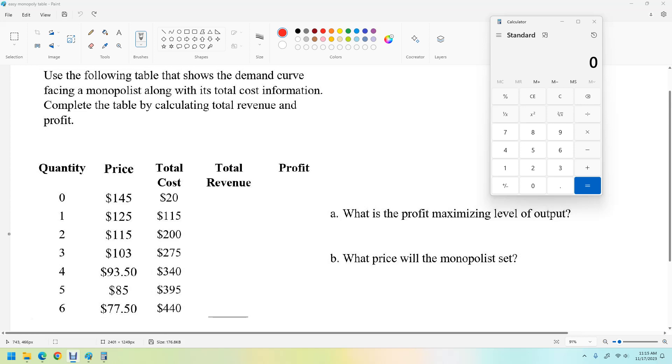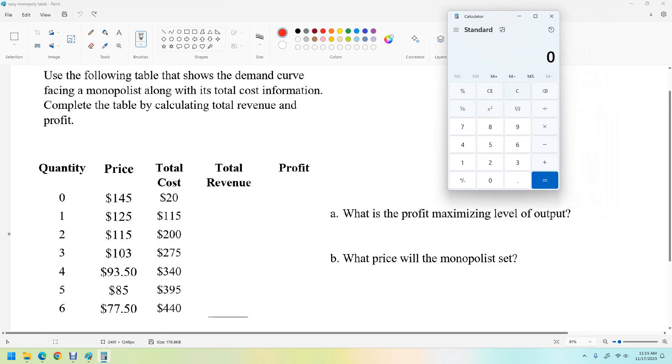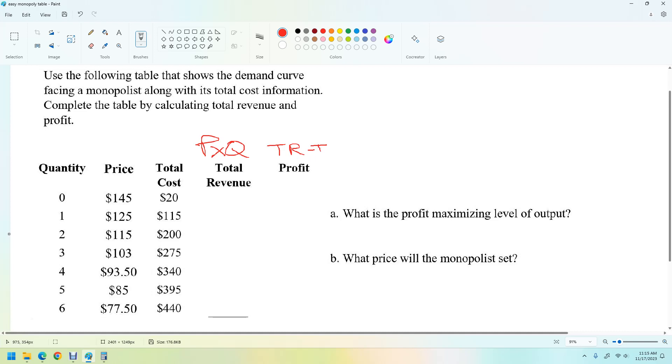So the really slow way to do this is to calculate total revenue and then just take the difference of total cost. It's not really the preferred way in economics, but let's do this the slow way. So total revenue is just price times quantity and then profit is going to be total revenue minus total cost.